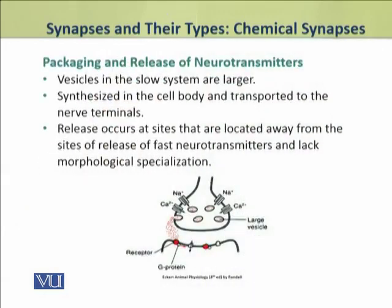The neurotransmitters involved in slow chemical synapses are packed in vesicles which are larger in size than those involved in fast chemical synapses. These neurotransmitters are synthesized in the cell body and transported to the nerve terminals. They are released from sites located far away from the release sites of fast neurotransmitters, and these sites lack morphological specializations.